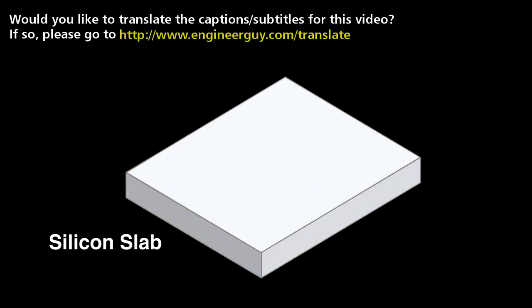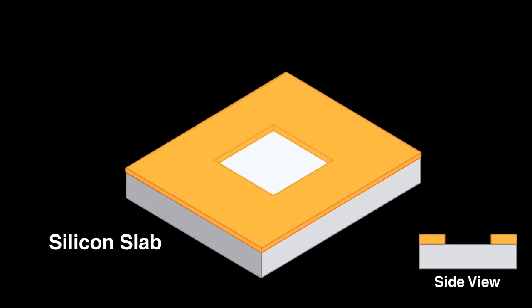To make a pyramidal hole in silicon, engineers cover all but a small square with a mask impervious to the potassium hydroxide. Now, it only etches within the square shape cordoned off by the mask. The potassium hydroxide dissolves silicon faster in the vertical than in the horizontal direction. This is why it makes a pyramidal hole.